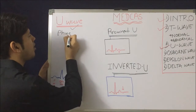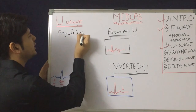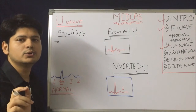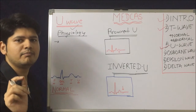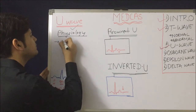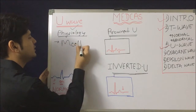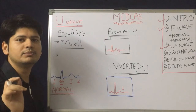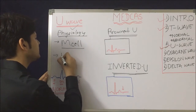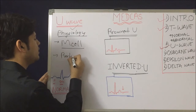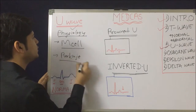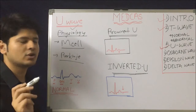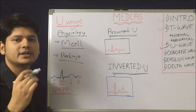There are two theories to explain how U waves are generated. One theory says the U wave is due to repolarization of the M cell, that is the mid-myocardial cell. The other theory says it is due to delayed repolarization of the Purkinje fiber. So these are the two theories: mid-myocardial M cell repolarization or Purkinje fiber delayed repolarization.